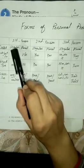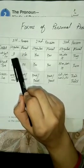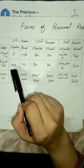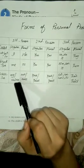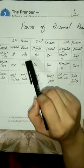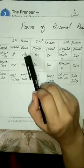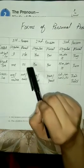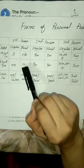First person pronouns are 'I' and 'we'. 'I' is used as singular — it is the subjective case. The objective case of 'I' is 'me', and the possessive case of 'I' is 'my' or 'mine'. 'We' is used as plural — 'we' is the subjective case. The objective case of 'we' is 'us', and the possessive case of 'we' is 'our' or 'ours'.